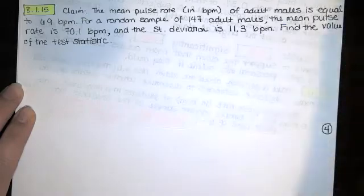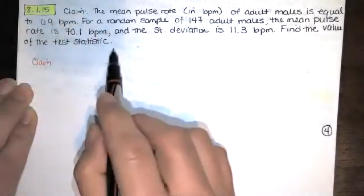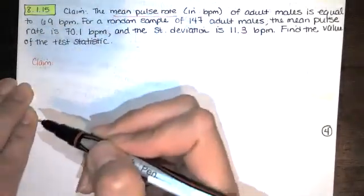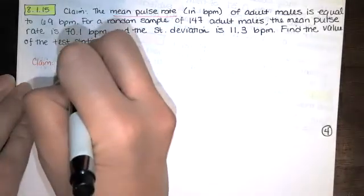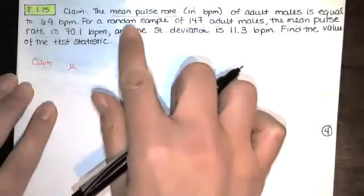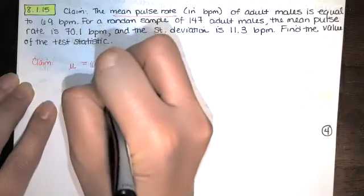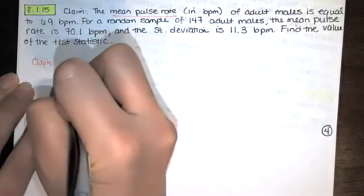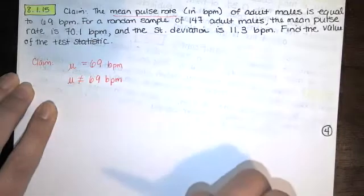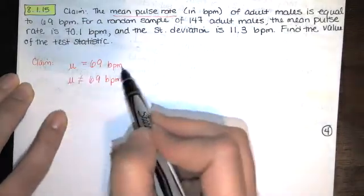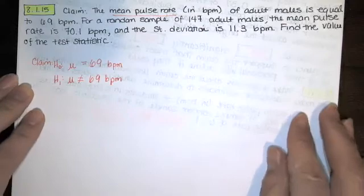The first thing that I would do on this problem is I would state the claim. Now notice that they're talking about a mean pulse rate, so we want to state a claim about a population mean of adult males. The claim is that the mean pulse rate of adult males is equal to 69 beats per minute. Now if that's not true, we would have the mean is not equal to 69 beats per minute. Between these two statements, the one that contains the condition of equality is this first one, so the claim happens to be the null in this case. Our alternative hypothesis is this one.